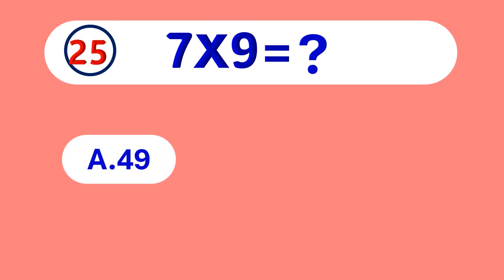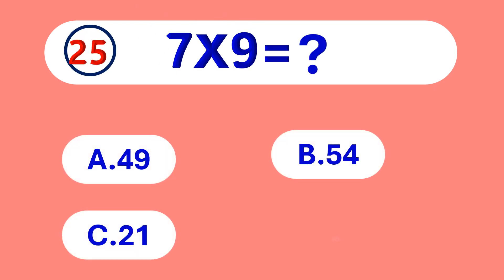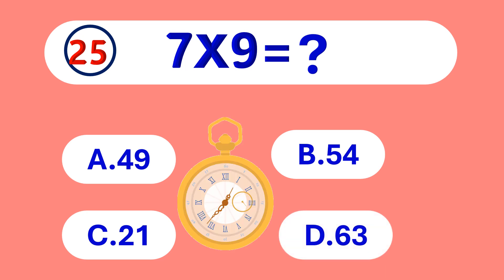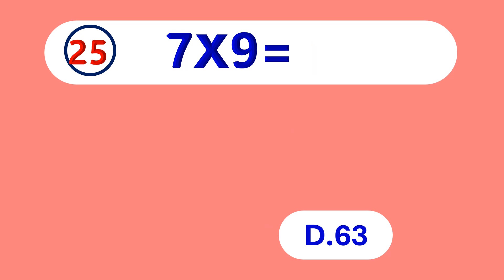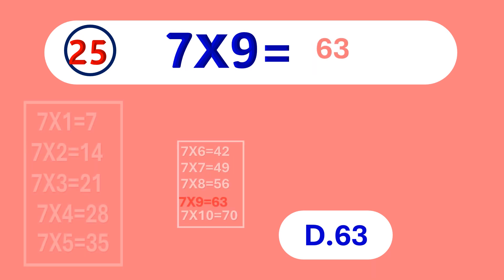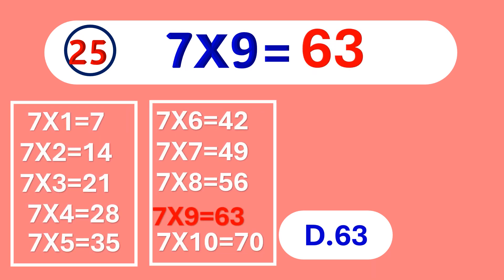7 times 9 is equal to... 63. 7 times 9 is 63.